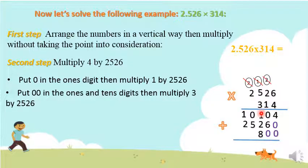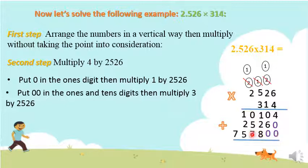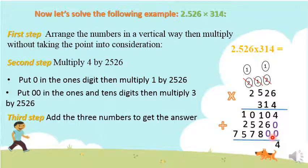3 times 6 is 18 — write 8 and carry 1. 3 times 2 is 6, plus 1 is 7. 3 times 5 is 15 — write 5 and carry 1. 3 times 2 is 6, plus 1 is 7. Now we finished the multiplication. We add the answers starting from right to left: 4 plus 0 plus 0 plus 0 is 4. Then 4 plus 6 plus 8 plus 2 is 20, plus 1 is 11, carry 1. 5 plus 7 is 12, plus 1 is 13, carry 1. 5 plus 2 plus 7 is 14, plus 1 is 8, carry 1. And here we have 9, then 7.